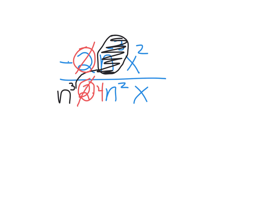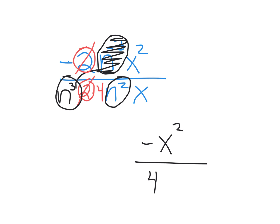It's getting really messy. At some point in the problem, you have to rewrite it. So I still have a negative on the top and there's an x squared on the top. And on the bottom I've got a 4, I got this n to the third and this n squared. Couldn't I put them together and say n to the fifth? Yes, I can put them together. And then there's still an x on the bottom. You can put the x first, you can put the n first — it doesn't matter.